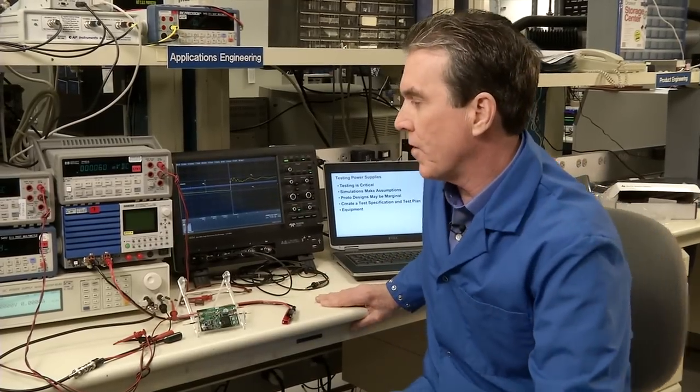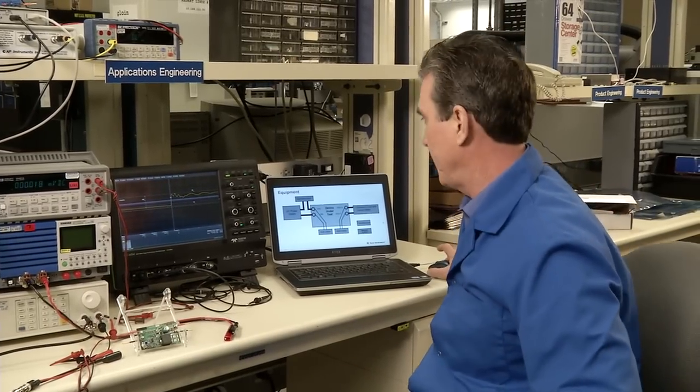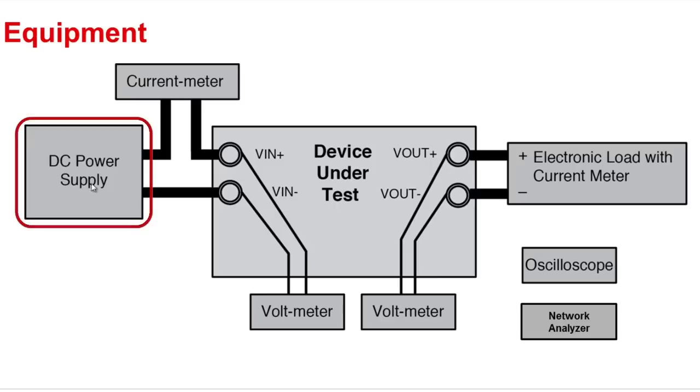Also, you'll be needing equipment. And let's refer to the graphic here to show you the type of equipment you'll be needing. Of course, on the input, you'll need a DC power supply that can provide the voltage and current necessary for your specific system. And on the output, you'll be needing some type of a load, preferably an electronic load or dynamic load to provide the ability to perform transient load testing.